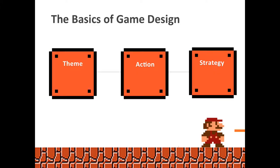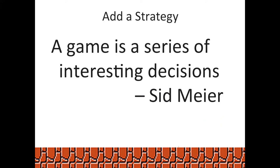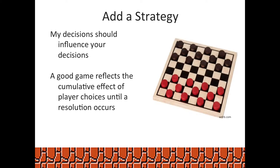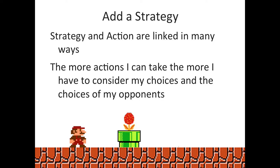That comes down to strategy — the third and final key component of using game design mechanics in the classroom. It's about giving students choices that will really influence how they play and how their opponents play. As Sid Meier says, a game is a series of interesting decisions. If you've played Civilization, you know it's just all a series of decisions. My decision should influence yours and vice versa. A good game reflects the cumulative effect of player choices until there's an outcome — until a win state is achieved. Strategy and action are linked: the more actions I can take, the more I have to consider my choices and the choices of my opponents.